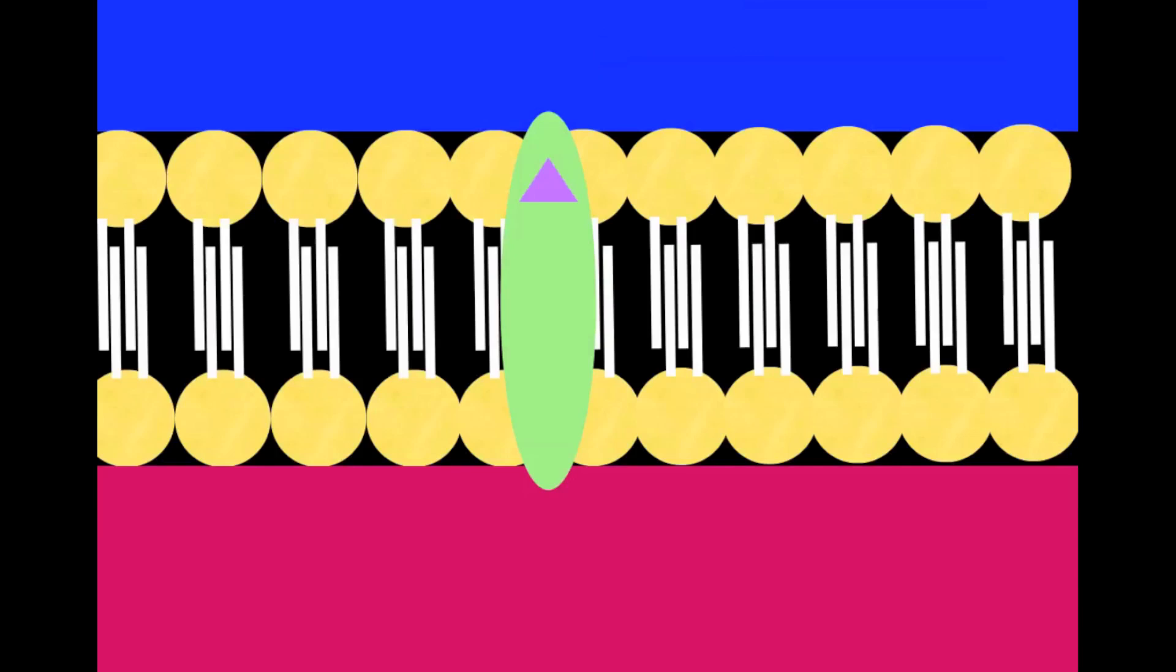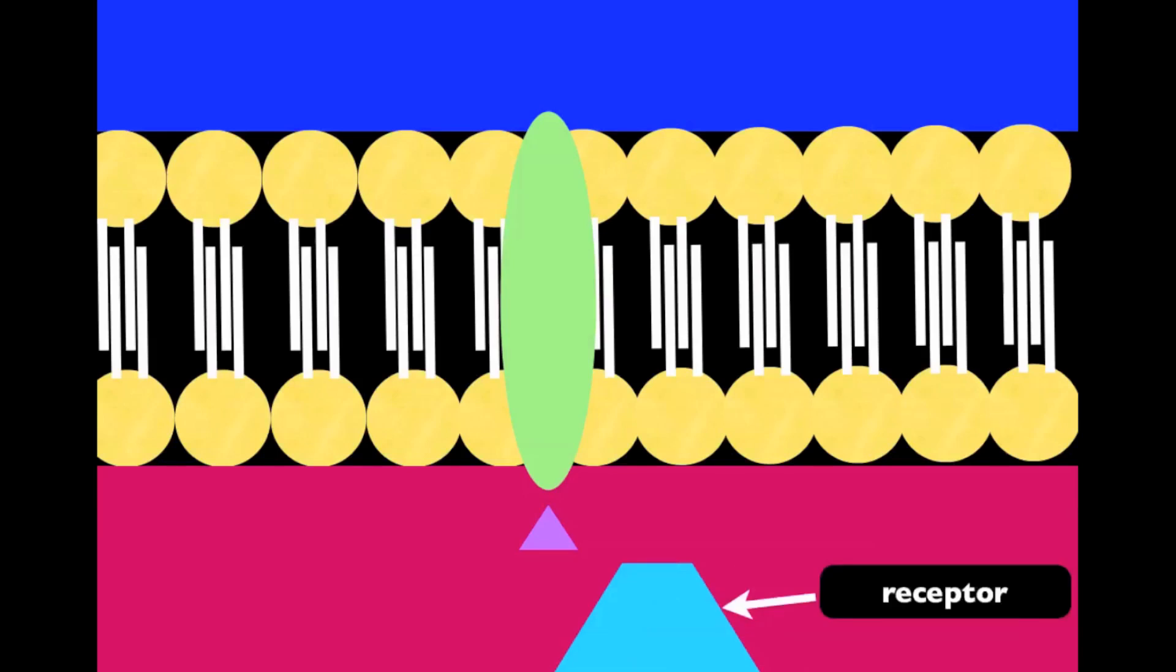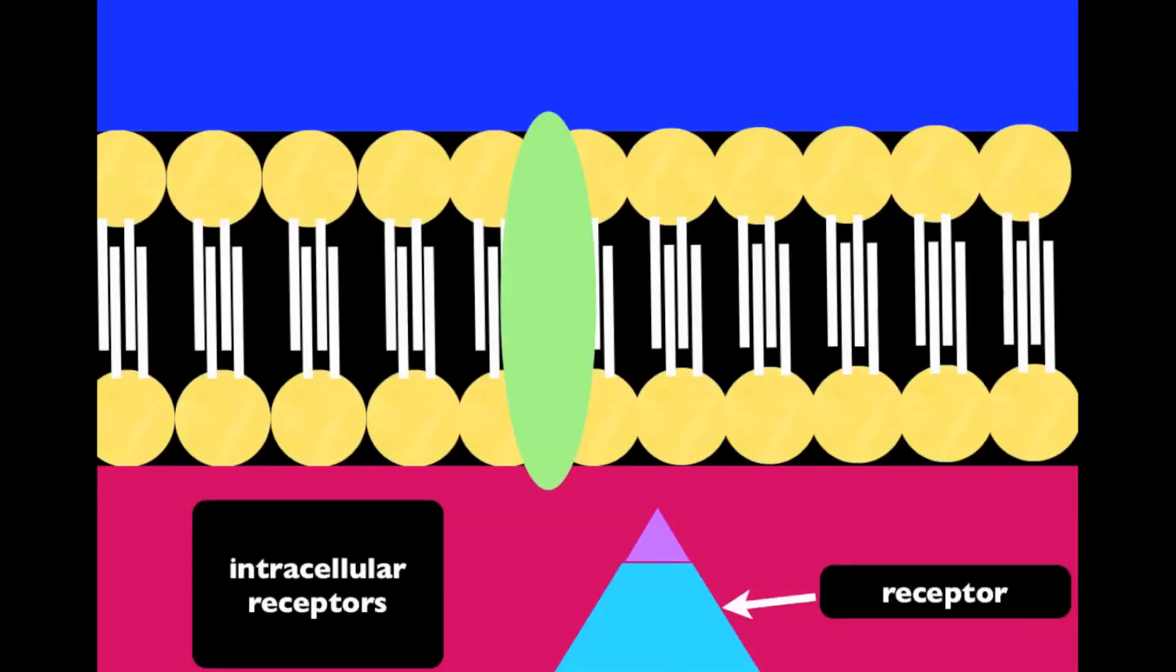So the ligand travels down the protein channel and ends up inside of the cell. On the inside of the cell, there is something called a receptor. This is kind of like the person that wants to hear the gossip. The ligand comes to the receptor and tells the cell that message in the same way that someone might tell you a juicy piece of gossip. These are known as intracellular receptors because they come into the cell to tell you the message.